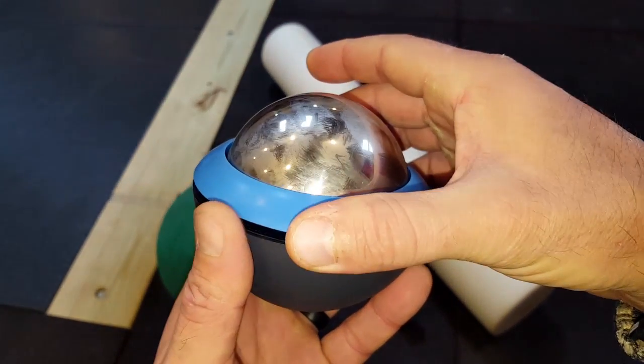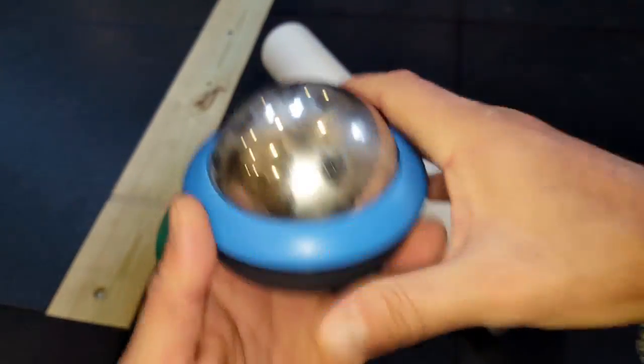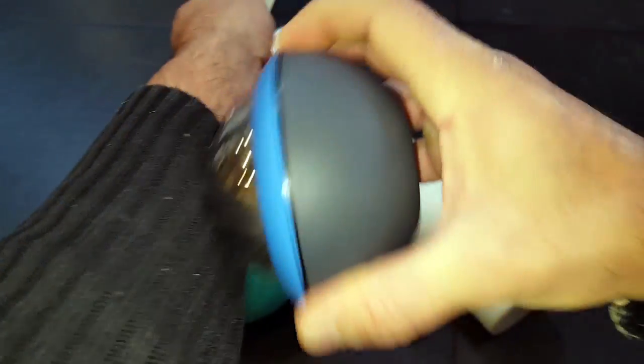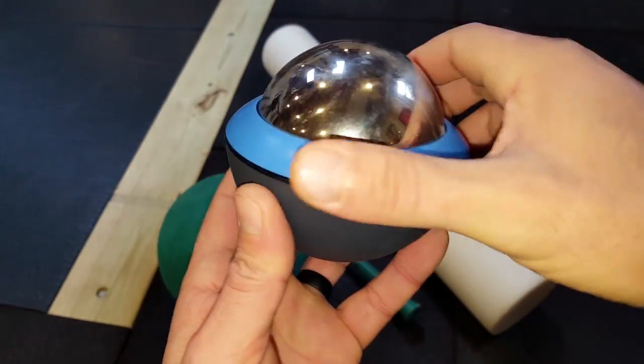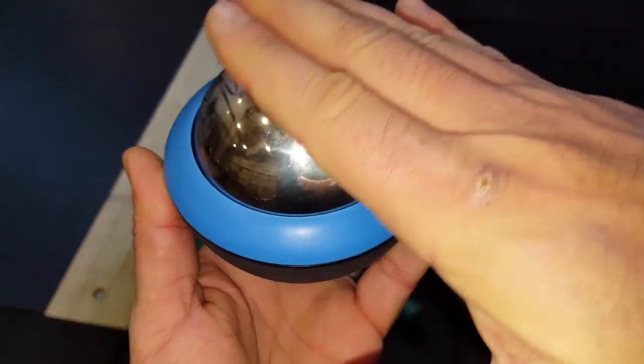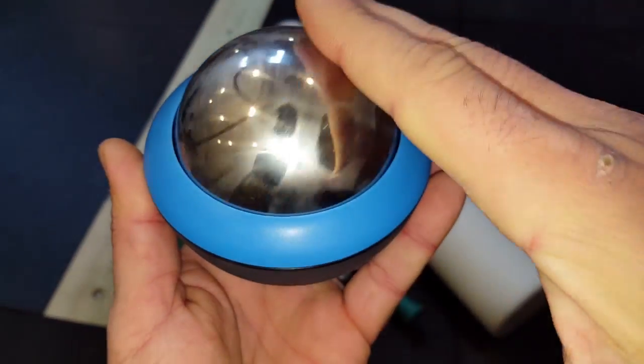So what this does is it comes in a little housing here so that you can keep it together if you just want to work out certain things on the body and just get a slight pressure release with that. Also, it stays stationary so that if you are rolling on top of it, the ball rolls.